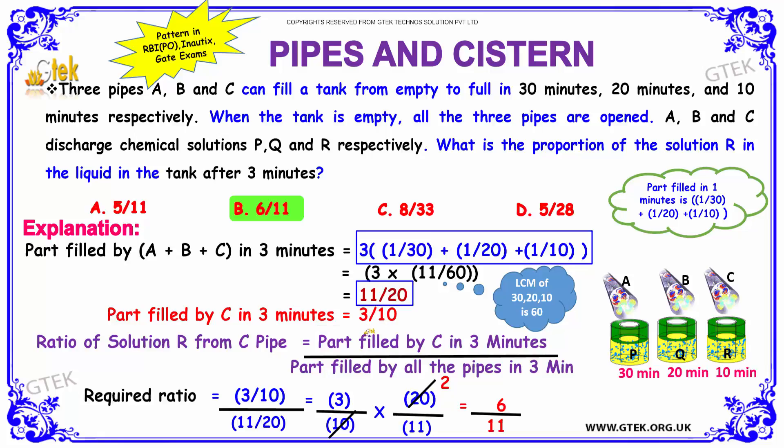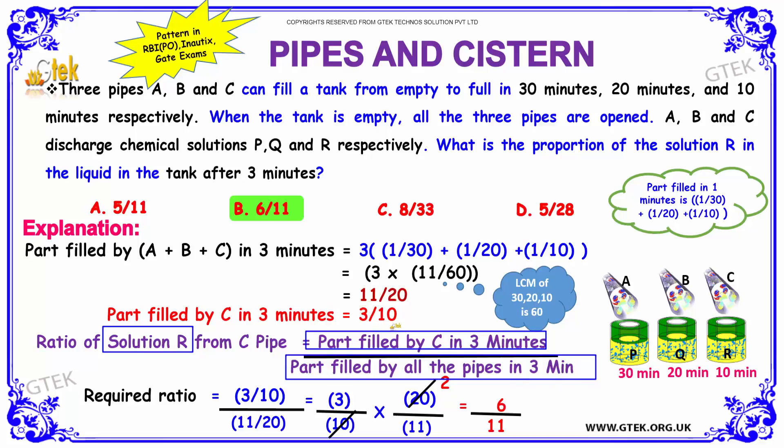The part filled by C in 3 minutes will be 3 multiplied by the part filled in 1 minute, that is 1/10, so 3/10. To find the ratio of solution R from pipe C, it can be written as the part filled by C in 3 minutes divided by the part filled by all pipes in 3 minutes. So the part filled by C in 3 minutes is 3/10 divided by the part filled by all pipes in 3 minutes which is 11/20. That gives your ratio to be 3/10 multiplied by 20/11, which is 6/11.